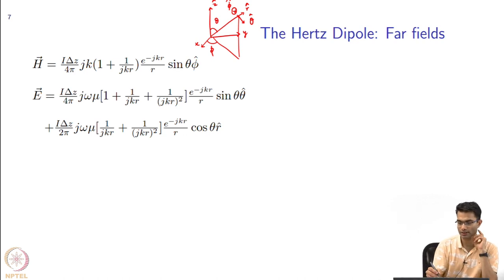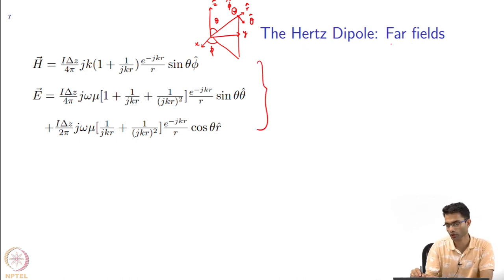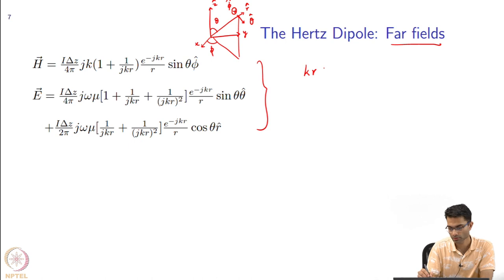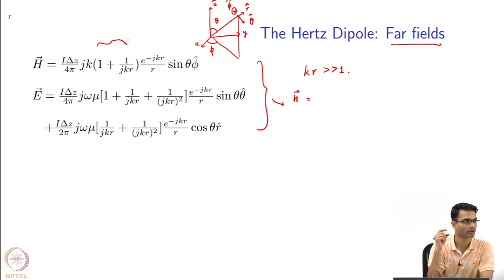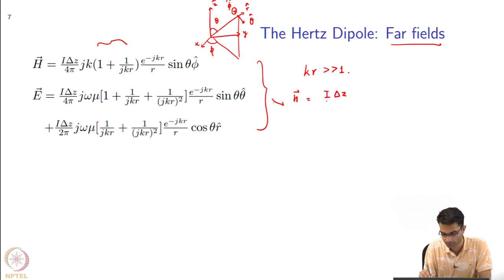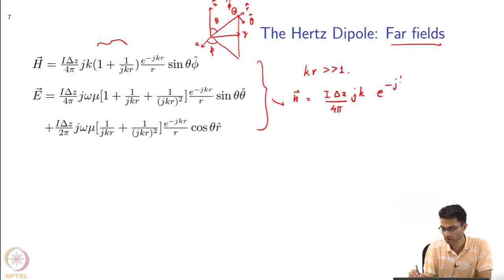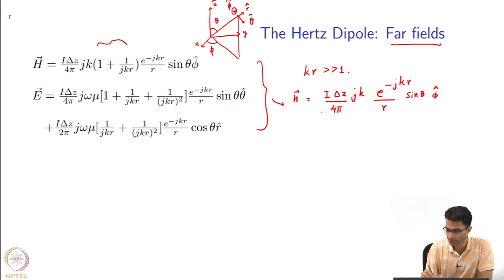Let us take a simplified version of this when we look at what are called far fields. In this problem, far field is when kr is much much greater than 1. Under this approximation, in the magnetic field expression I have two terms in the bracket — I will just keep the first term because kr >> 1. The magnetic field becomes: (I·Δz / 4π) · jk · e^{-jkr}/r · sin(theta) · phi-hat.